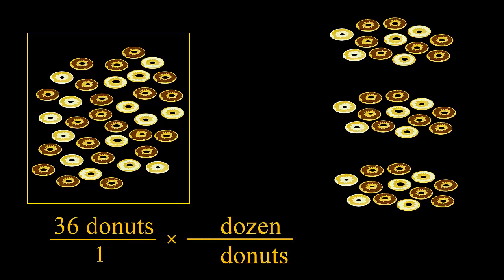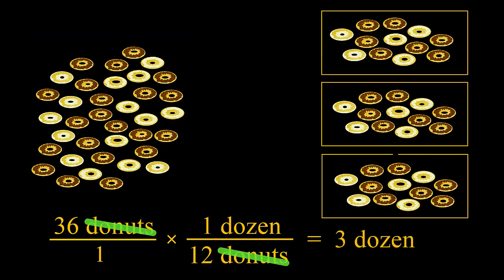The donuts provide another simple example, converting donuts to dozen. Starting with 36, we convert with donuts on the bottom and dozen on top. The relationship is 12 to 1. Donuts cancel, we are left with 3 dozen.